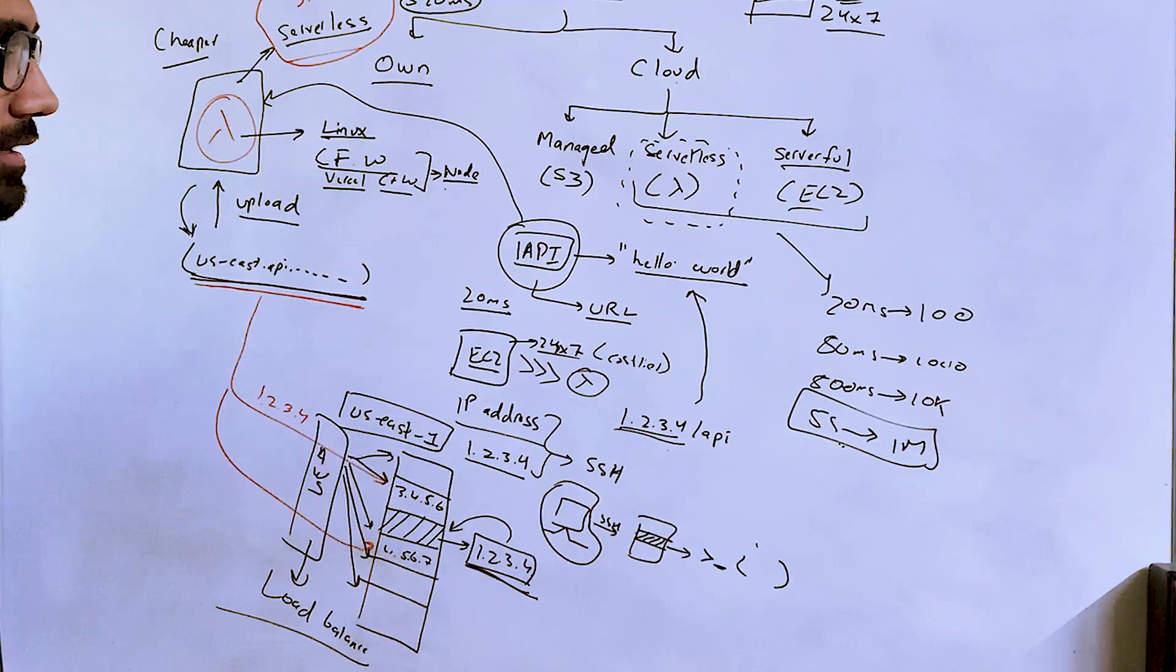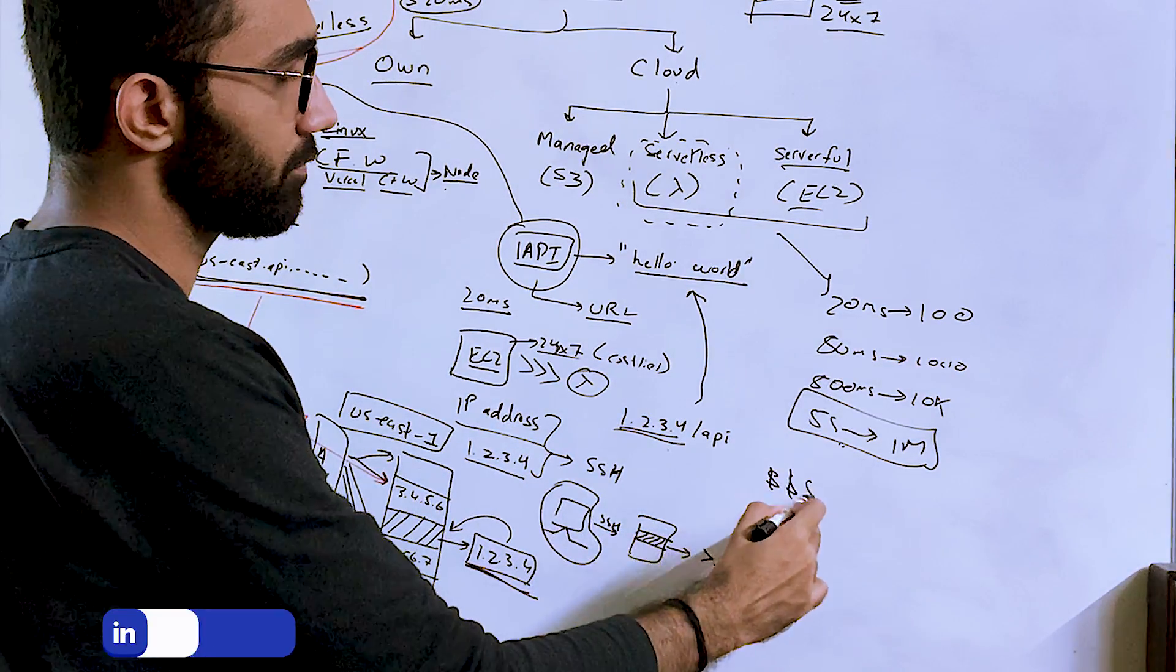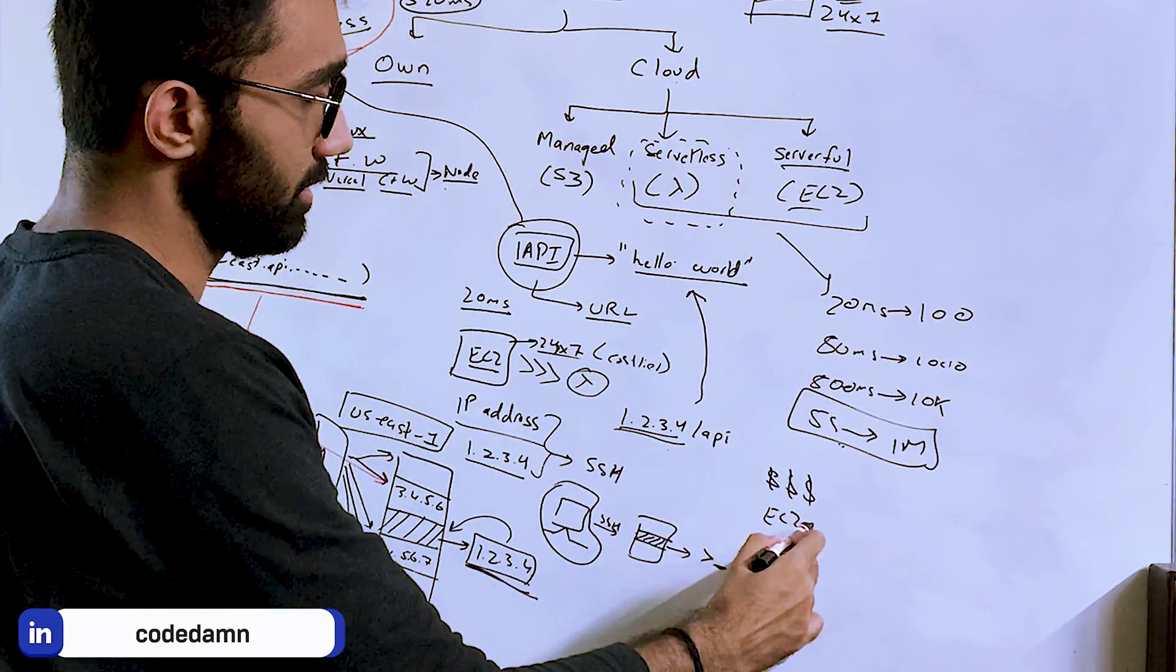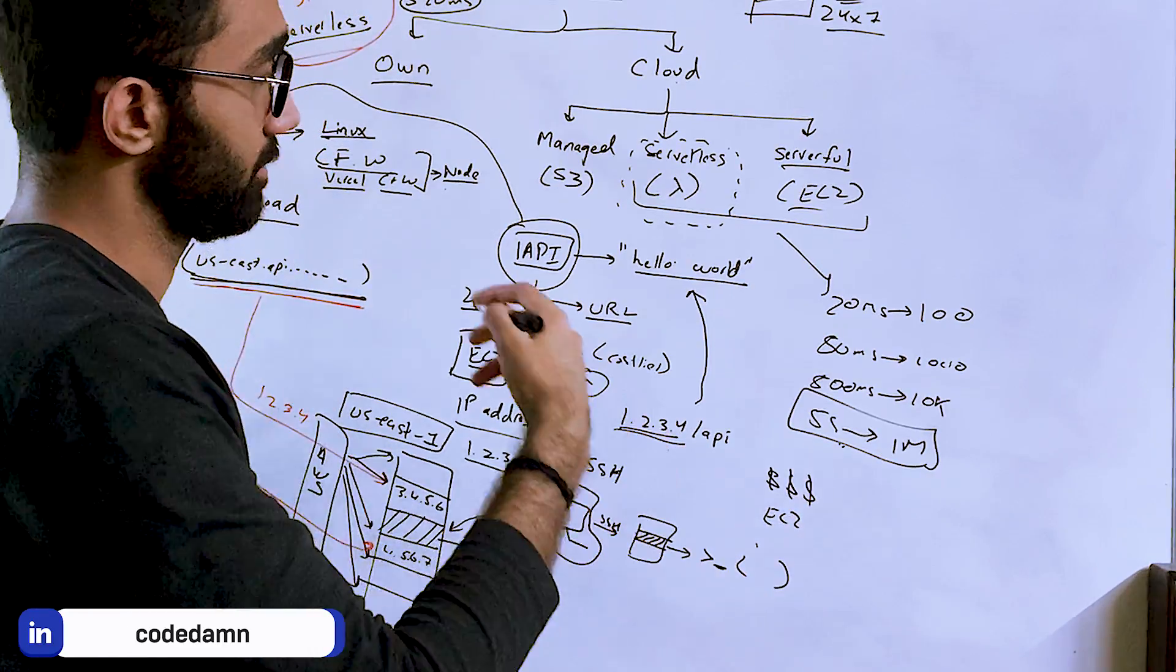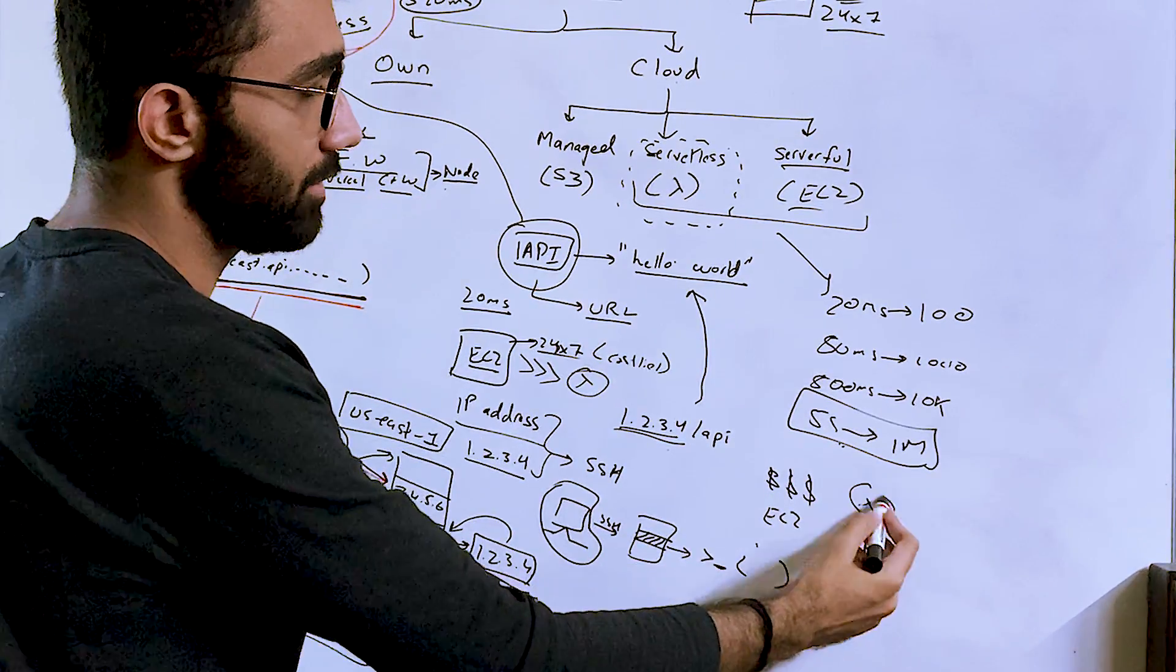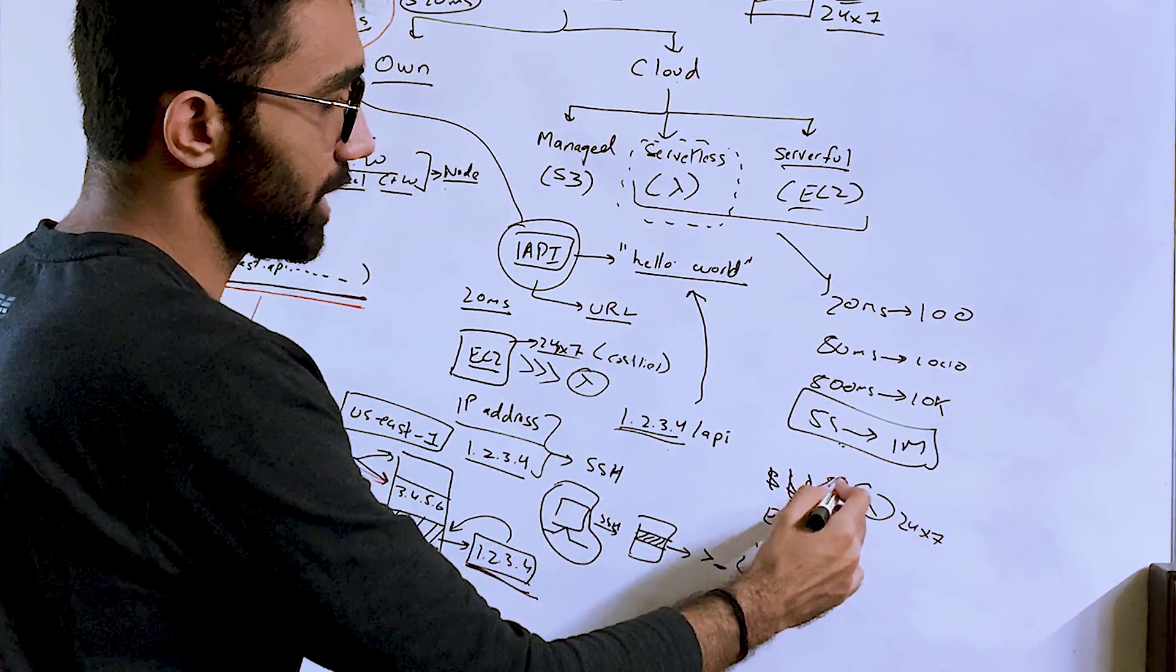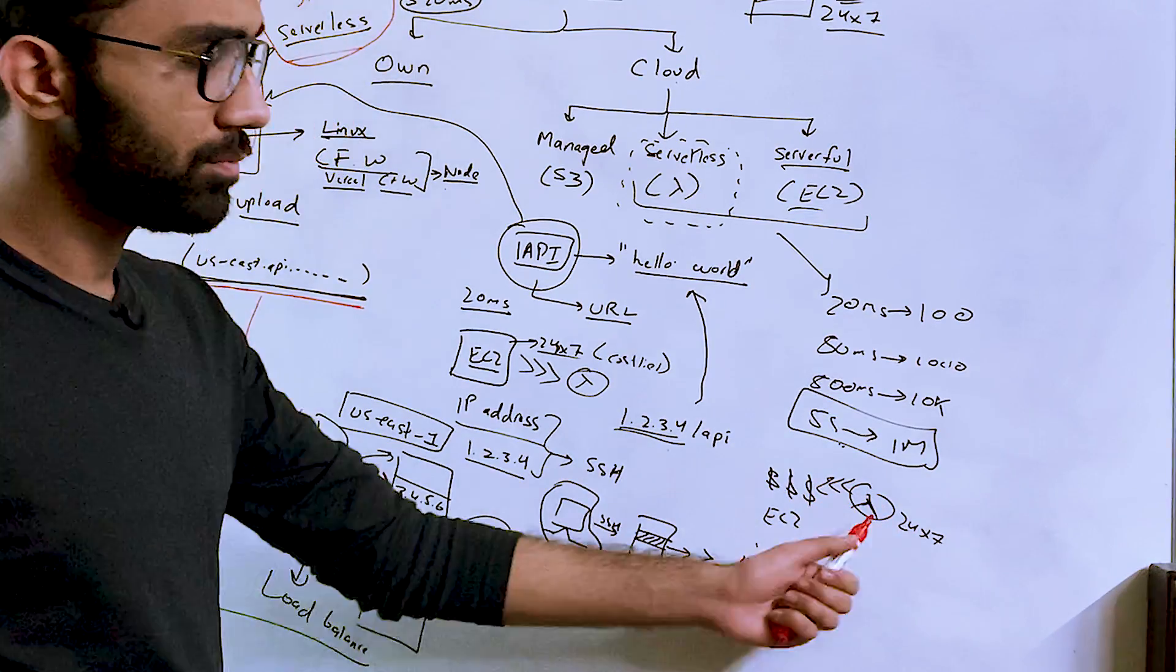Because even if you go ahead and run some numbers, whatever expense you get for running EC2s 24-7, if you compare that by running lambdas 24-7, then lambdas are much expensive than EC2. And this should be the case. Why?